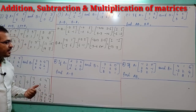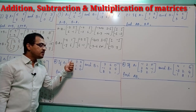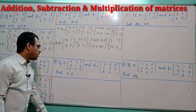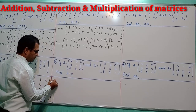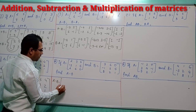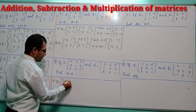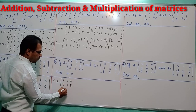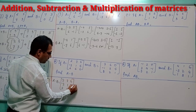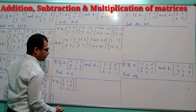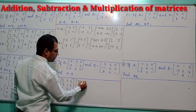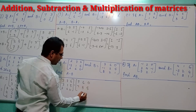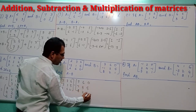Now moving to the next question where the matrices are 3 by 3 — meaning there are 3 rows and 3 columns. We have to find A minus B. Write matrix A as [2, 7, 6; −3, 1, 5; 2, 6, 0] and matrix B as [7, 6, 0; −1, 3, 5; 8, 2, 1].